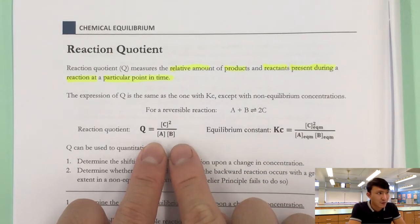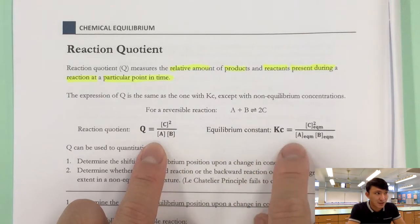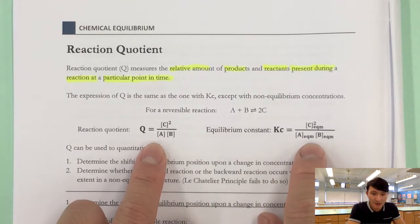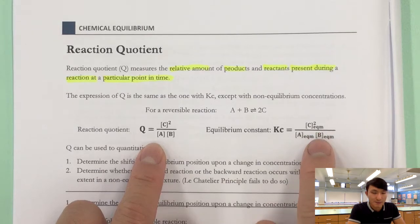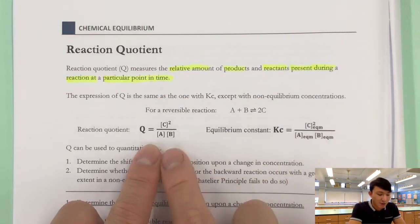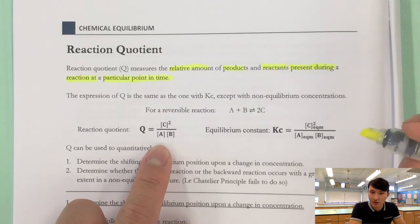It looks very familiar because it is basically the same as the equilibrium constant Kc. But the difference is that for Kc we have the subscript 'eqm', meaning we are talking about the equilibrium concentrations. However, for the reaction quotient, it does not necessarily have to be the equilibrium concentration.